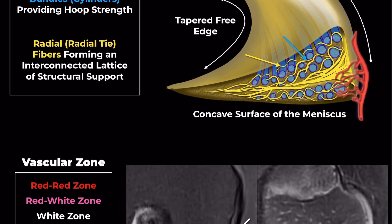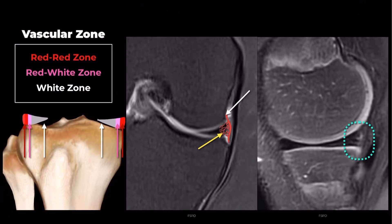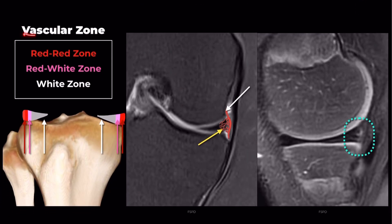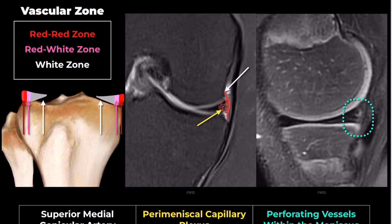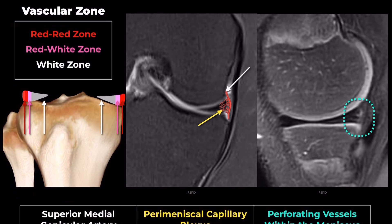Another critical aspect of the meniscus is its vascular zones: the red, red-white, and white zones. Typically, the red zone encompasses 10–30% of the peripheral area, while the red-white zone extends about 3–5mm from the peripheral meniscus. In contrast, the white zone is relatively avascular.